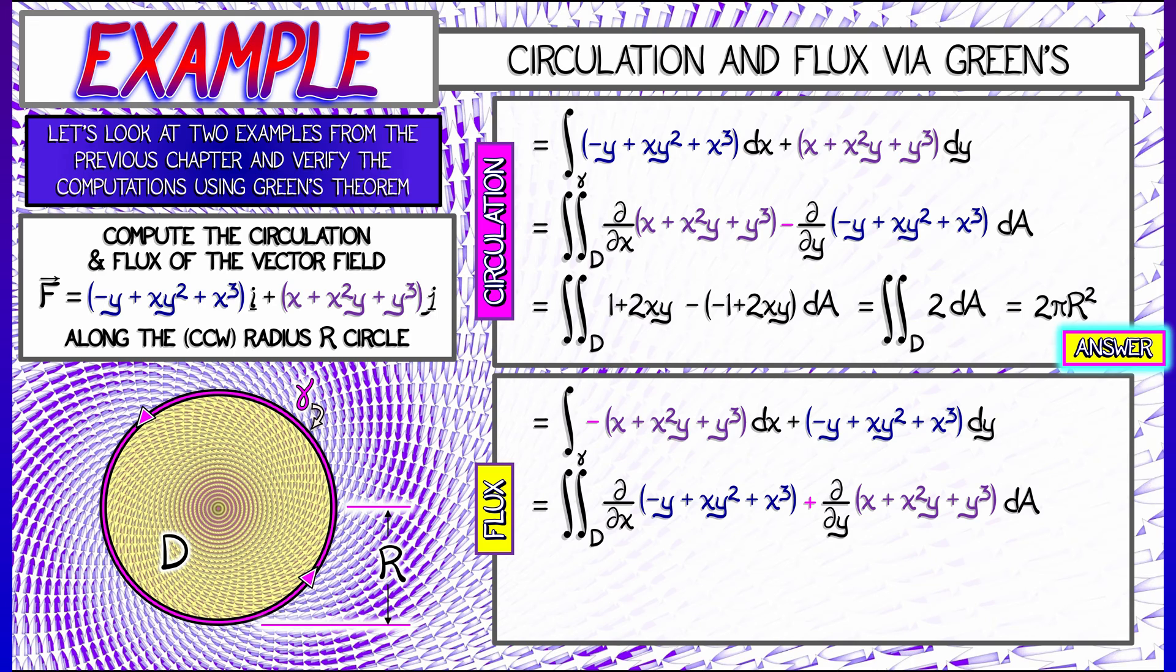Now, be careful with your plus and minus signs when you're working with this flux one-form. In the end, after you do those partial derivatives, you'll see that you get the integral of 4 times quantity x squared plus y squared. This clearly calls for polar coordinates.